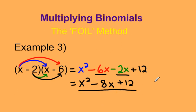And there you have it — a quick and easy way to multiply two binomials using the FOIL method: first, outside, inside, last. Thanks for watching.